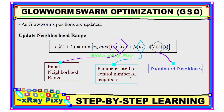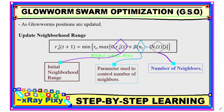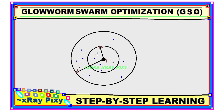Now that the position for each glowworm is updated, we update the neighborhood range — that is, the decision radius. For any glowworm i, we can see the sensor radius and the decision radius calculated using the update equation, which takes the initial neighborhood range and a parameter that controls the total number of neighbors. Using this we can update the neighborhood range so that in the next iteration, after positions are updated, each glowworm can easily find other glowworms within its range.